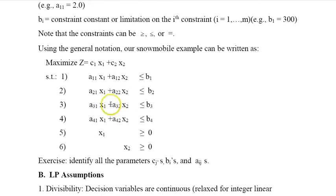Just to help you understand this, identify the cs, the bs, and the ais in this model from the snowmobile example. So like a12 would be 0 in this case, a21 is 0.